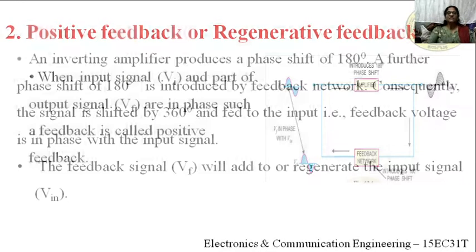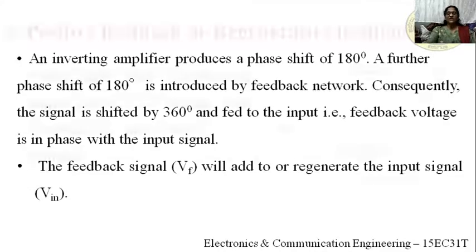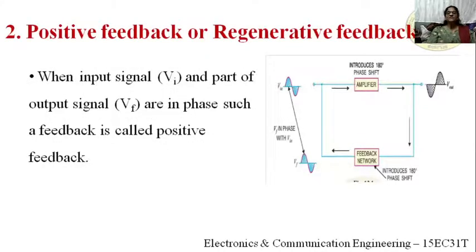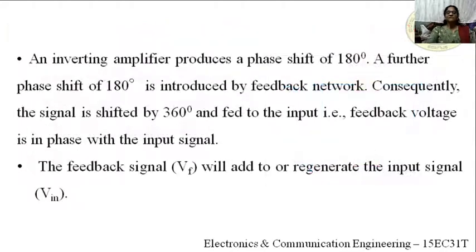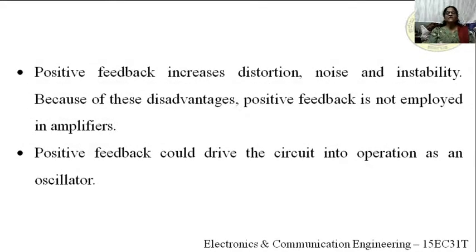In positive feedback, the feedback signal VF adds to or regenerates the input signal since both VI and VF are in phase. This increases the input to the amplifier, which in turn increases the output and the gain. Positive feedback increases distortion, noise, and instability — because of these disadvantages, positive feedback is not employed in amplifiers.